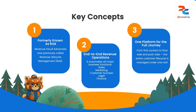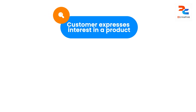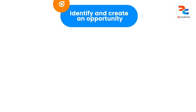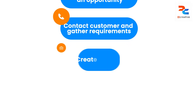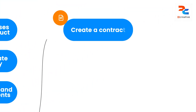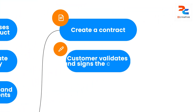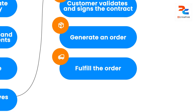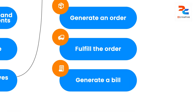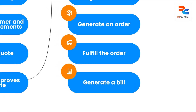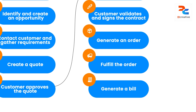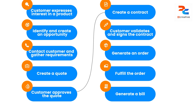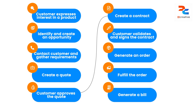Let's take an example of the whole journey of a customer who wants to buy a product from you. We identify and create an opportunity, connect with the customer, gather all the requirements, and create a quote. If the customer is happy with that quote, we create a contract, get all the signatures and formalities fulfilled, generate an order, ship it, fulfill it, and generate a bill. That's the journey from lead to opportunity to billed order — and now we have revenue coming into the organization. That's what Revenue Cloud is working on.